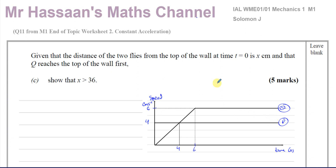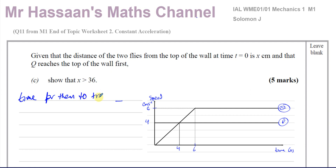Now for part C, we're dealing with distances. When you have a speed-time graph and you're dealing with distances, you've got to think about the area under the graph. We should try to find the time it takes for them to travel the same distance — that will tell us the time it takes Q to catch up with P.